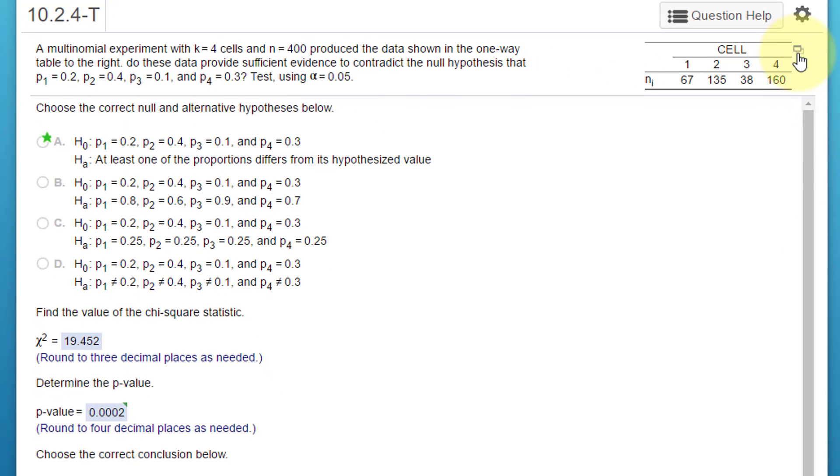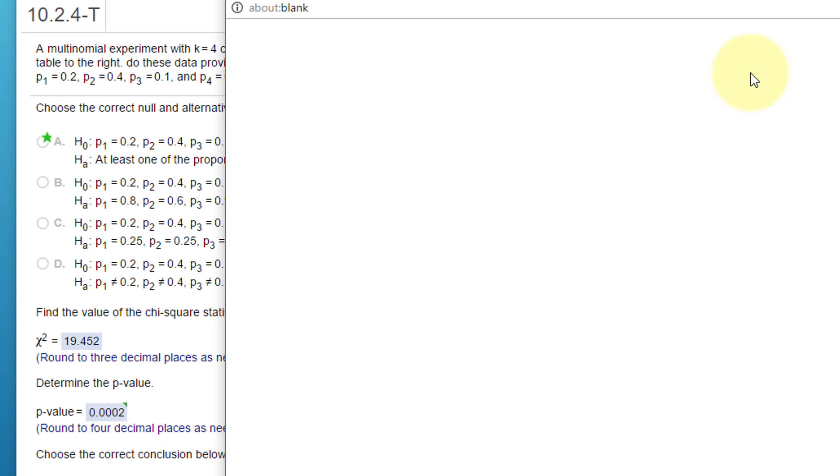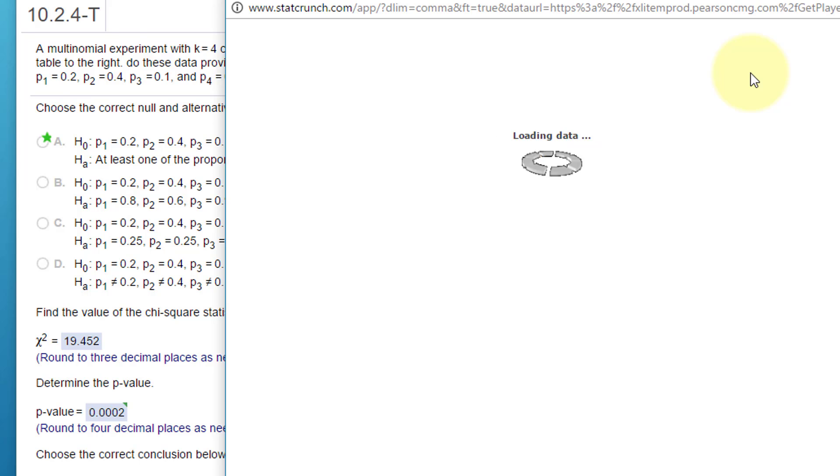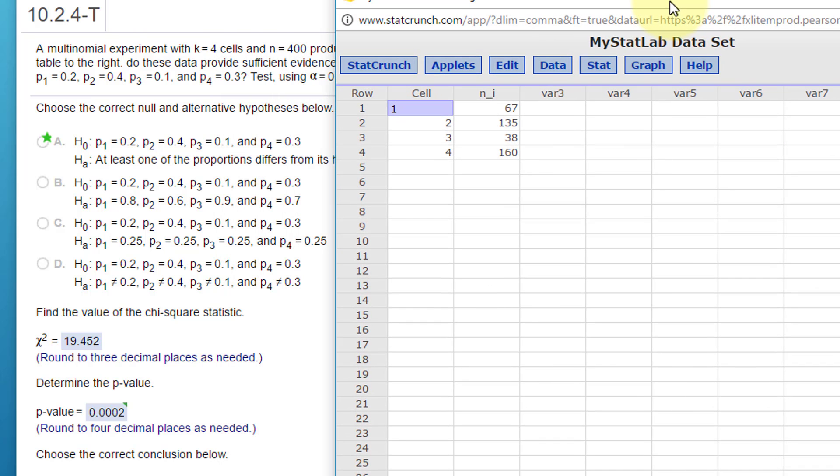Let's go over here, we're going to click on a little icon. I'm going to open this in StatCrunch and we get this data here. I'm going to change the name of that so that I can understand it.